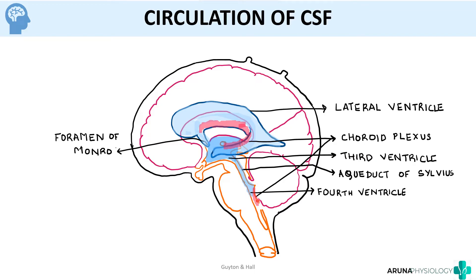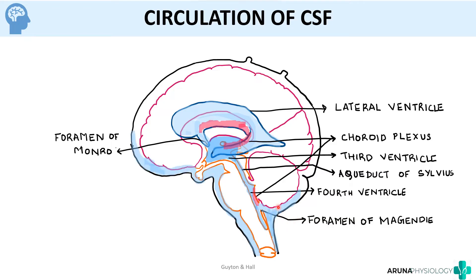From the fourth ventricle, CSF fills the Cisterna Magna through the foramen of Magendie. The fourth ventricle also has two lateral openings called the foramina of Luschka, which cannot be shown in this section. The CSF then fills up the whole subarachnoid space and finally drains into the arachnoid villi.